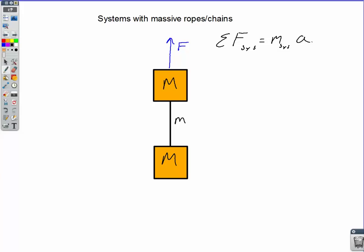So free body diagrams for the upper block. We have F pulling up, we have its weight, Mg pulling down, and then we have a tension in the rope here. Let's call this T1 pulling down.